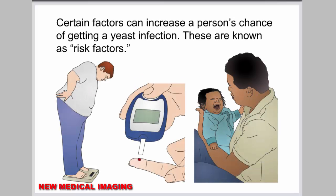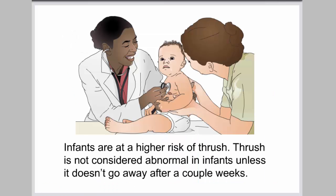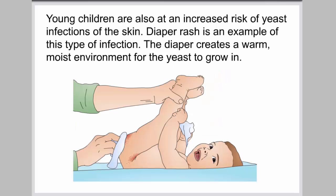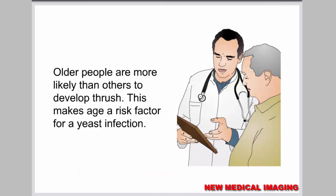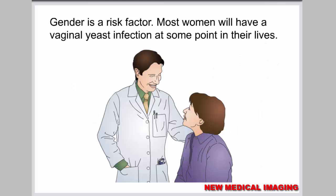Certain factors can increase a person's chance of getting a yeast infection. These are known as risk factors. Infants are at a higher risk of thrush, which is not considered abnormal unless it doesn't go away after a couple of weeks. Young children are also at increased risk of skin yeast infections, such as diaper rash. Older people are more likely to develop thrush. Most women will have a vaginal yeast infection at some point in their lives.